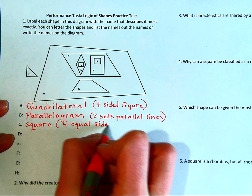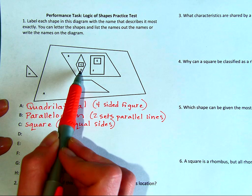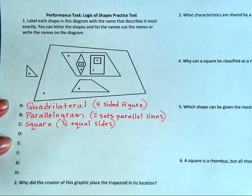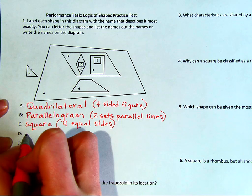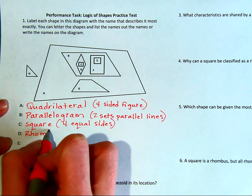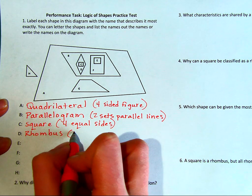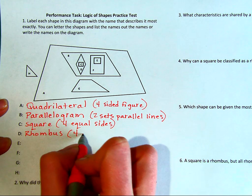Now talking about figure D: it has four equal sides. It doesn't have four right angles, so we can't classify it as a rectangle. So this will be called a rhombus because it has four equal sides.